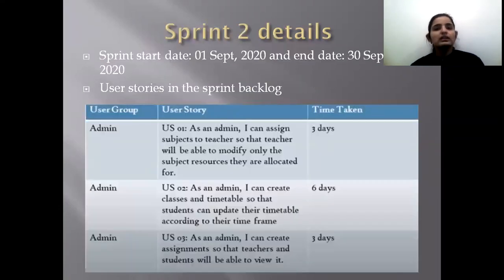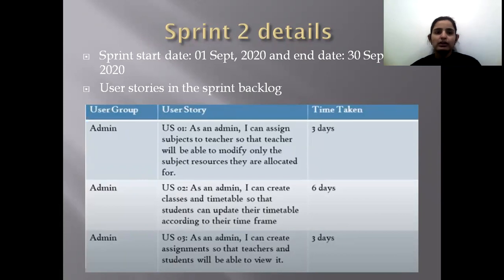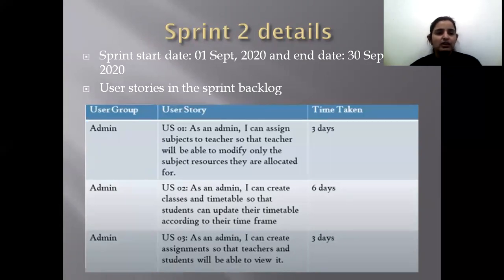Now sharing the Sprint 2 details. This sprint started on 1st of September 2020 and it will end on 30th of September 2020. The user stories in the Sprint Backlog are as follows. There are 3 user groups: admin, teacher, and student.